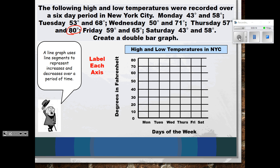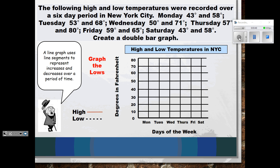Now we're ready to graph the information. Since this is a double bar graph, we have to decide how to represent each bit of information differently. I'm going to represent the high temperature with a solid red line and the low temperatures with a dashed black line. Starting with the lows: Monday was 43 degrees, Tuesday 53, Wednesday 50, Thursday 57, Friday 59, and Saturday 43 degrees.